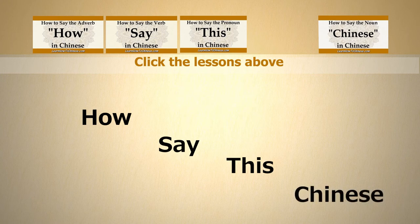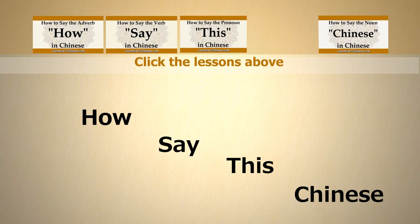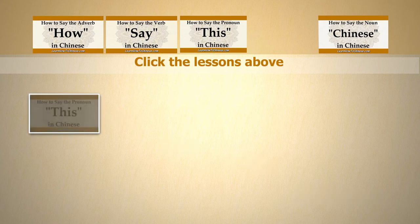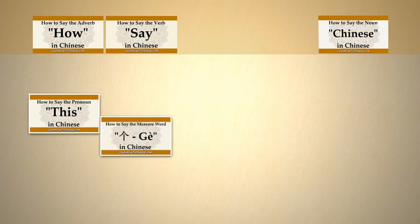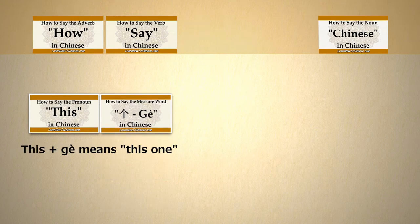Now we are going to rearrange the pieces based on the Chinese word order. First, we need the word this to begin the question. And in this case, this by itself does not refer to any specific subjects. So, we need to add a measuring word, 个, to get the meaning of this one.